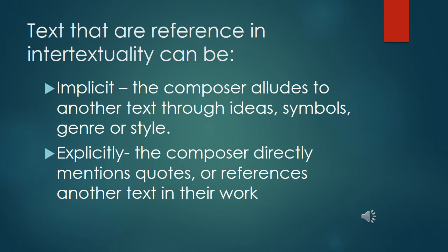Texts that are referenced in intertextuality can be implicit — that's when the composer alludes to another text through ideas, symbols, genre, or style. On the other hand, it can also be referenced explicitly, when the composer directly mentions, quotes, or references another text in their work. Composers refer to specific texts to help shape meaning because all texts portray a particular perspective on issues or messages, helping to enrich and extend a message.